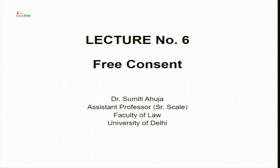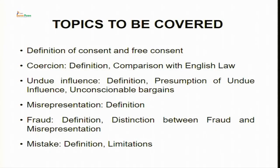This is the third C which we were discussing in the previous sessions — the third C when it comes to the validity of a contract or essentials of a valid contract. The first two being capacity to contract as well as consideration. The topics to be covered in this session are the definition of consent and free consent as given under the Indian Contract Act 1872, followed by coercion, its definition and comparison with English law, followed by undue influence, its definition, the concept of presumption of undue influence, as well as unconscionable bargains.